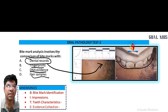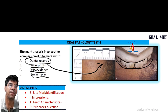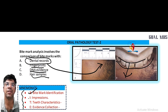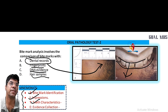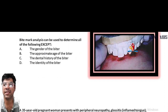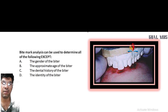The last option is hair samples — hair samples could be collected but are not the primary method. Bite mark analysis involves comparison of bite marks with dental records. Remember the mnemonic BITE: Bite mark Identification, Teeth characteristics, and Evidence collection.